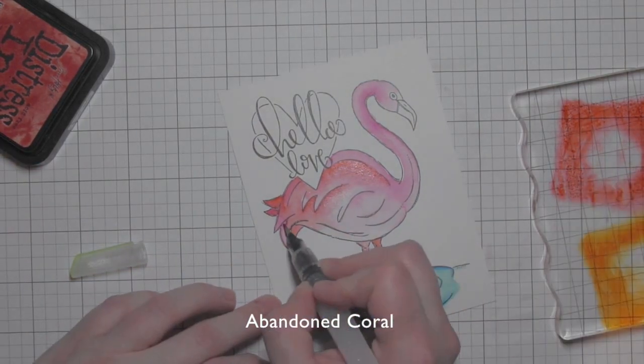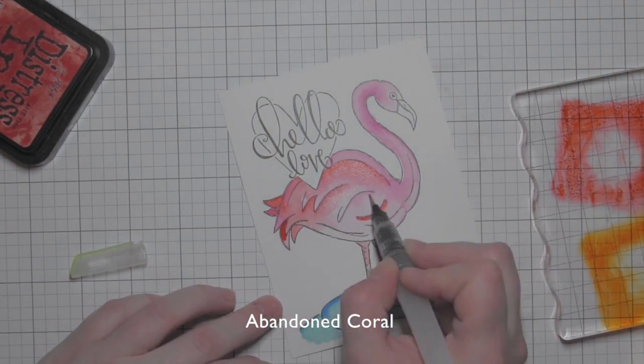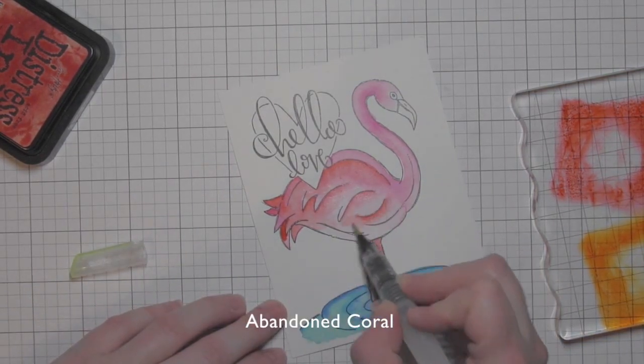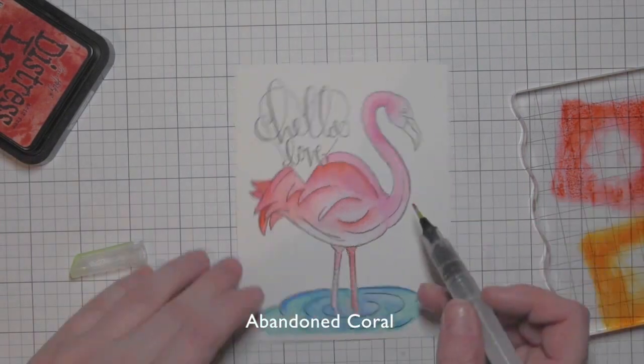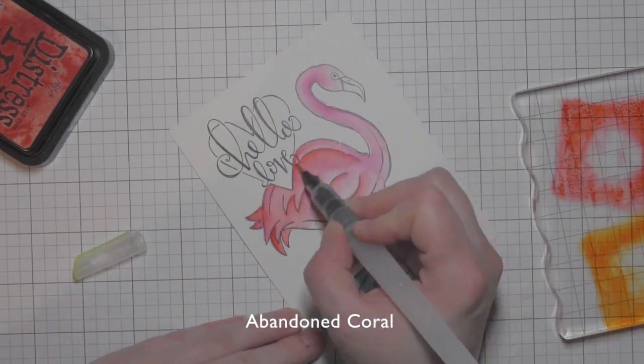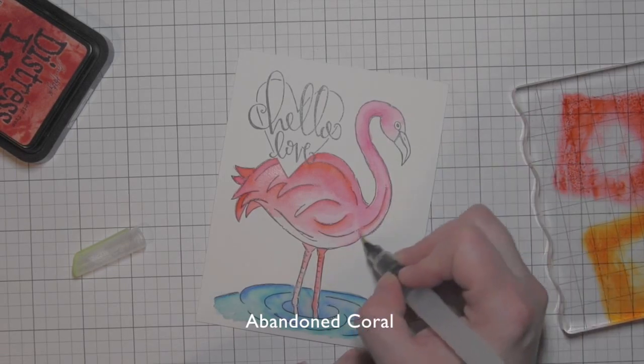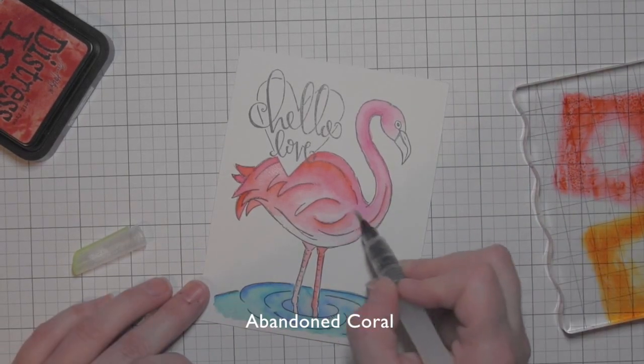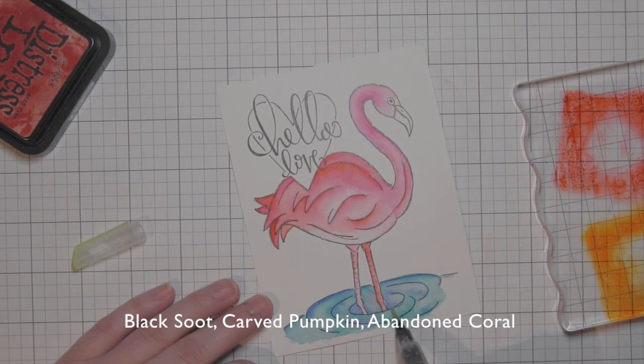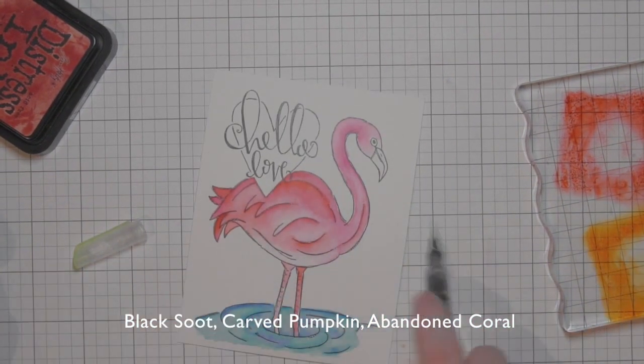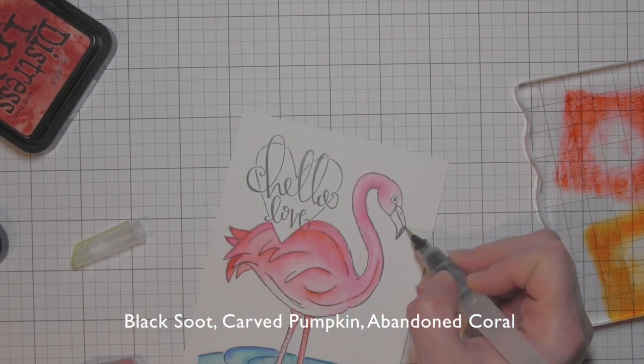Right away I can see that I like how this looks. I want to make sure and blend it out really good so it's not too harsh, but the addition of abandoned coral gives the flamingo the color I was looking for. It's kind of fun to experiment with your distress inks and see what works for the image you're coloring. I'll finish blending out those colors. You can always go back and work over any of the areas you've previously colored.